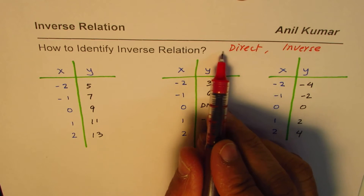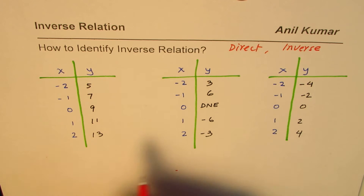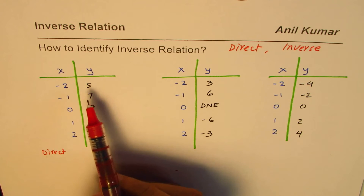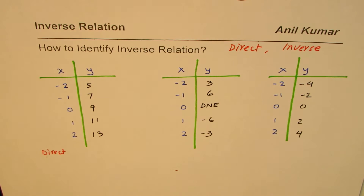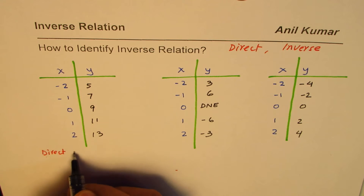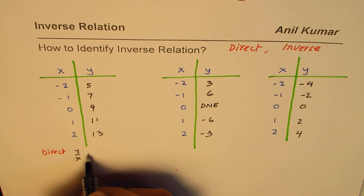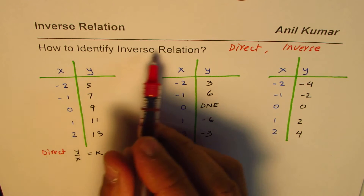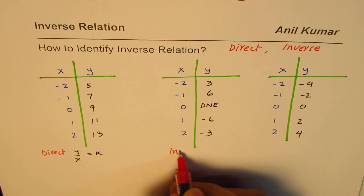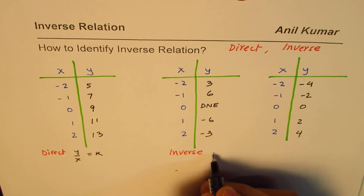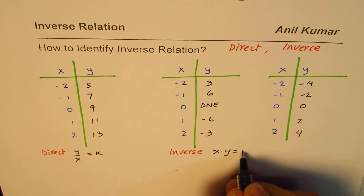If you are investigating for a direct relation, the condition is that the ratio of Y to X should always be constant — that is, Y divided by X equals a constant. For an inverse relation, the condition is that the product of X and Y is a constant.